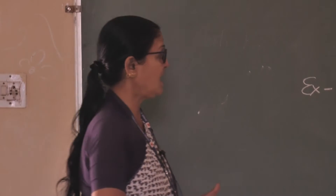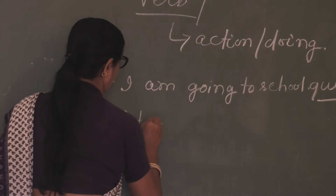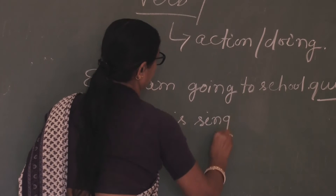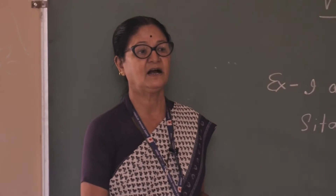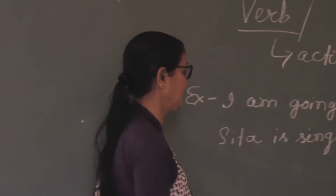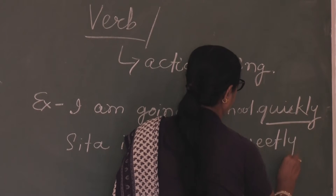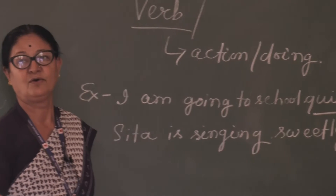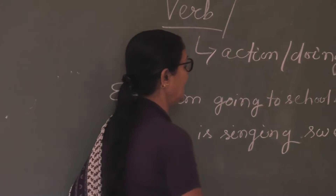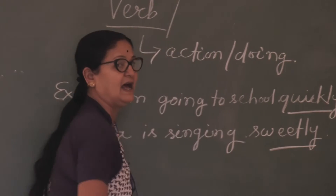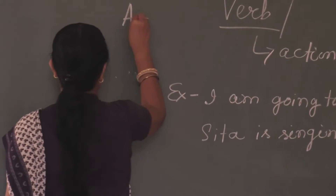I am going to school quickly. Then another example: Sita is singing. You can ask me how Sita is singing — Sita is singing beautifully or sweetly. Sita is singing sweetly. How Sita is singing? Sweetly. So, what we are getting? When we are asking how, when, or where, we are adding these words — quickly, sweetly. And these words are known as ADBHAR.